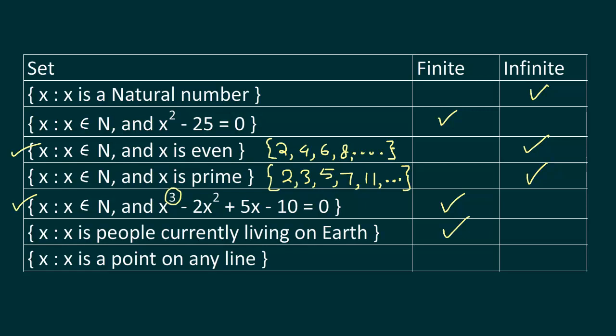And the last one, x where x is a point on any line. Recall that a line extends indefinitely on both sides. So how many points are possible? There are infinitely many points possible on a given line. So this would be an example of an infinite set.